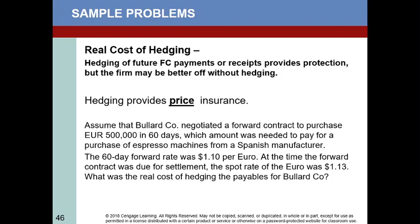If the exchange rate moves in the opposite direction, you learn from it to better inform future decisions. But you don't pay car insurance and then, when you don't have an accident, say you shouldn't have paid that premium. Assume that Bullard Company negotiated a forward contract to purchase 500,000 euros in 60 days, needed to pay a Spanish manufacturer. The 60-day forward rate was $1.10 per euro. At the time the forward contract was due for settlement — 60 days later — the euro was trading at $1.13. What was the real cost of hedging the payables for Bullard Company?